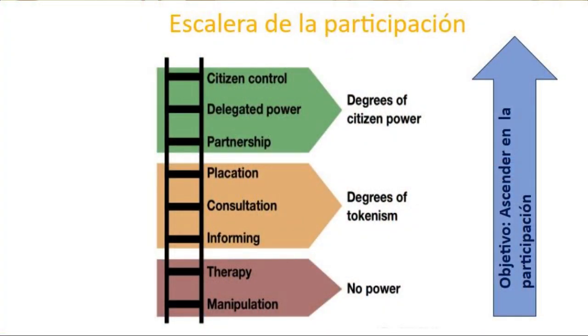We think a lot about participation as just creating consultation and informing people, but if you look at the ladder of participation it starts — unfortunately — with manipulation and therapy, where you just show people you're talking to them but give them no power. At a higher level is to inform them, have a consultation, and placate them — these are degrees of tokenism. Ideally, to reach a higher level would be to create partnerships, delegate power, and give citizens control — degrees of citizen power. The aim in designing the project is to go up the ladder for a more successful project design and implementation.